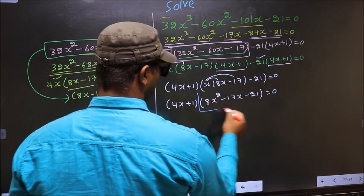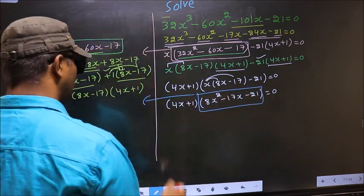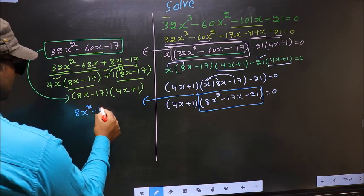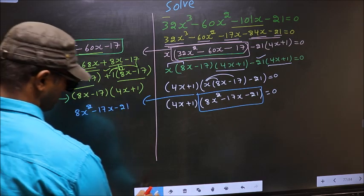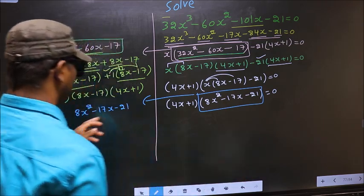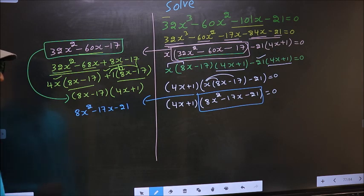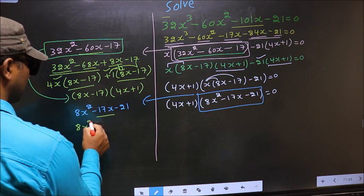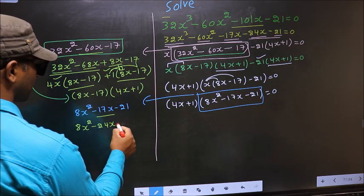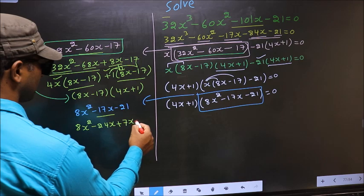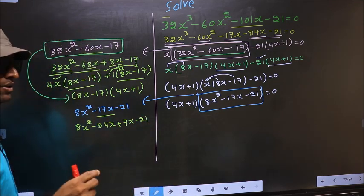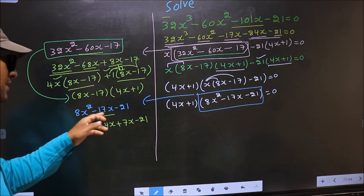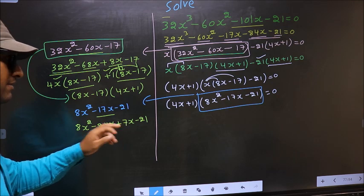Now we have a new quadratic: 8x² minus 17x minus 21. To factorize this we should split the middle term, minus 17x. So in place of minus 17x I write minus 24x plus 7x minus 21. Directly I have split minus 17x into minus 24x plus 7x.